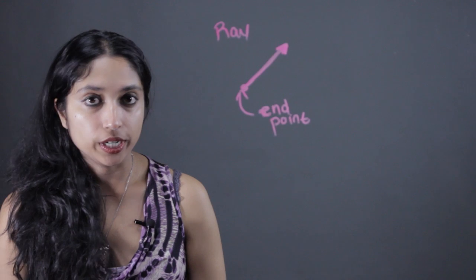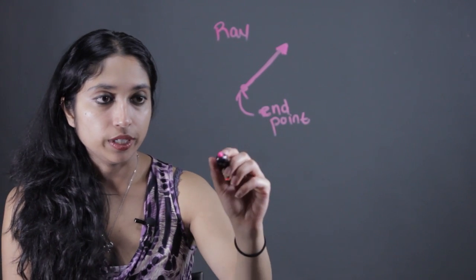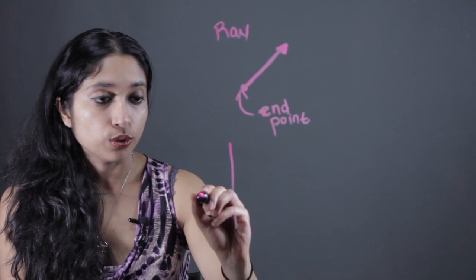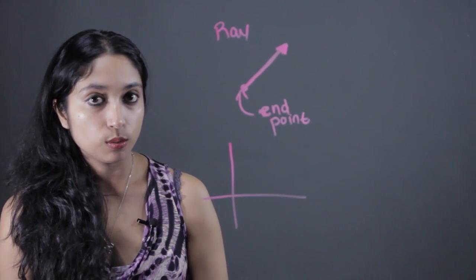Now when you want to draw an endpoint, you're just going to draw it like any other point. So say you had a problem and they told you you had a ray extending infinitely in one direction,